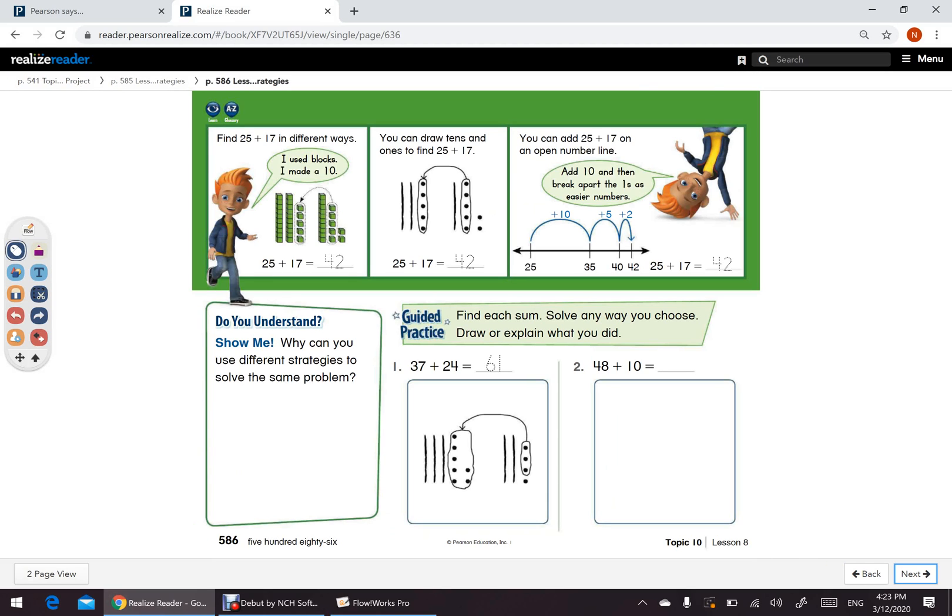Page number 586. Now, here on the top of the page, as you can see, we can add 25 plus 17 using blocks, or by drawing 10's and 1's, or by using open number line. Now, find each sum, solve any way you choose, draw or explain what you did.